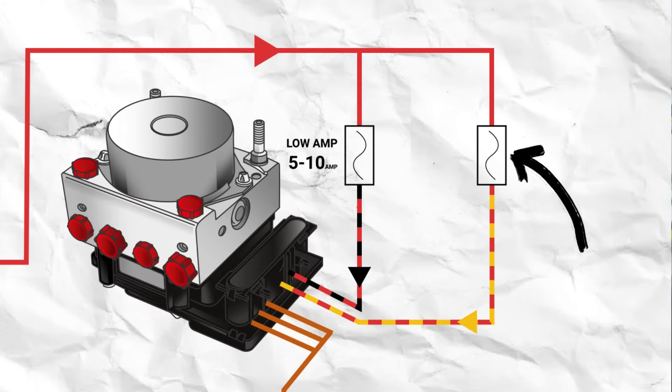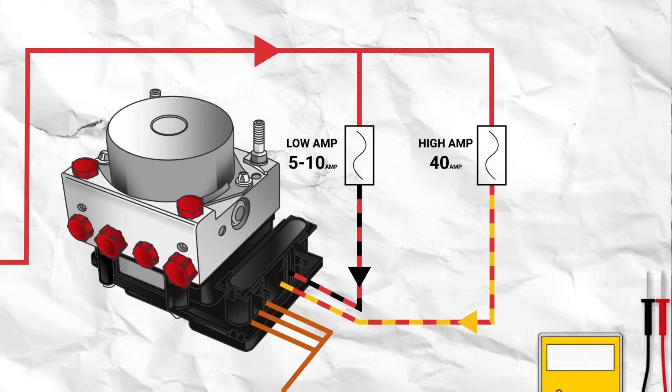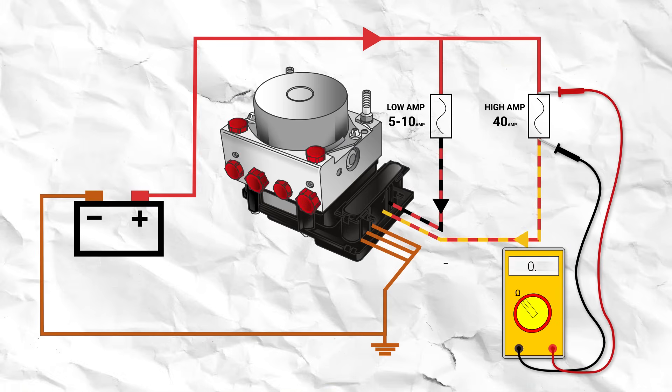The second fuse is the one we are interested in, which is for the pump motor operation. This will be a high amp fuse rated typically around 40 amp. Test the resistance of the fuse, which should be zero ohms. If it measures open circuit, then replace and retest the ABS.